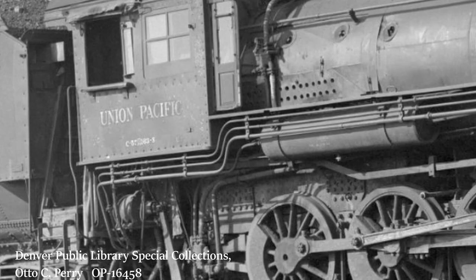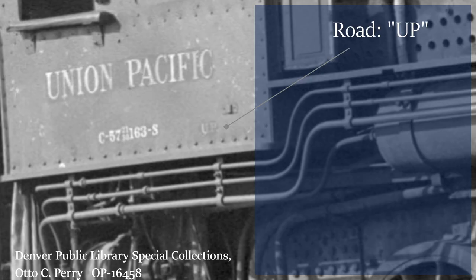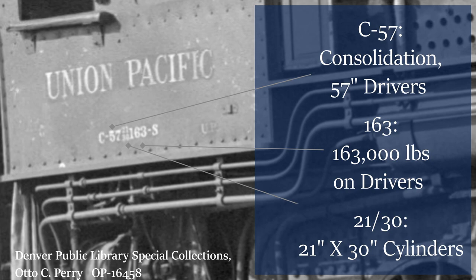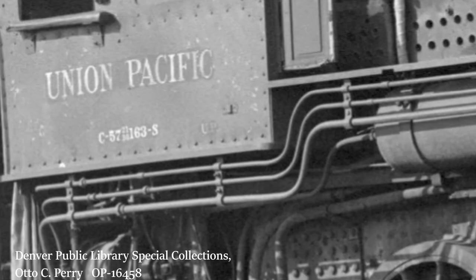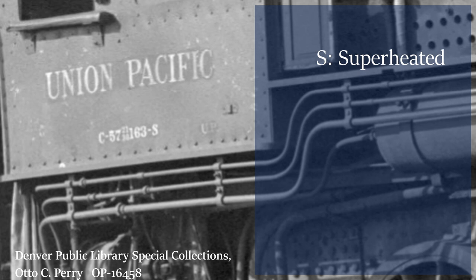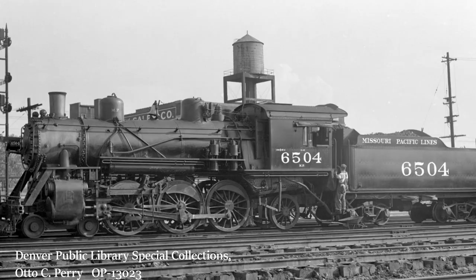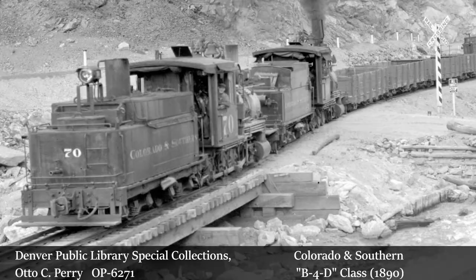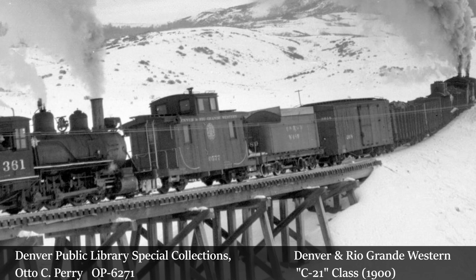The Union Pacific and Southern Pacific were heavily into cabside notation, and because of their Harriman association there were some similarities in their systems — class identification, driver height, weight on the drivers, cylinder size, whether superheated, whether a stoker, those sorts of things. The Missouri Pacific displayed class ID, driver height, tractive effort, and the Cooper bridge rating — Cooper 40 being a rating based on whether a bridge could handle two Consolidation locomotives with a 40,000-pound axle load double-heading a continuous freight train across a bridge.